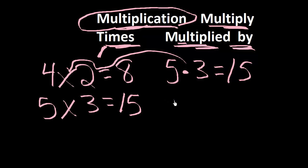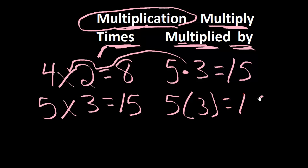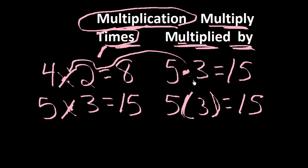Or you might see parentheses, like 5 times 3 equals 15. So this would be multiplied, or times, or parentheses — all have to do with multiplication.